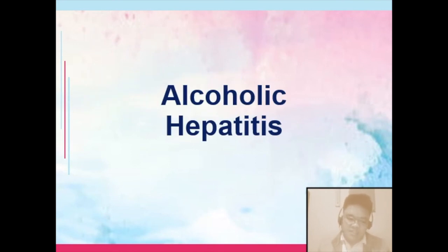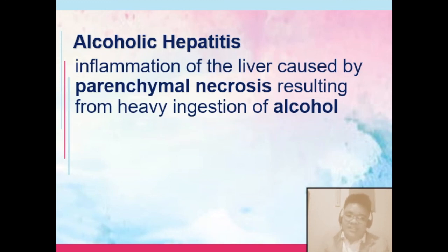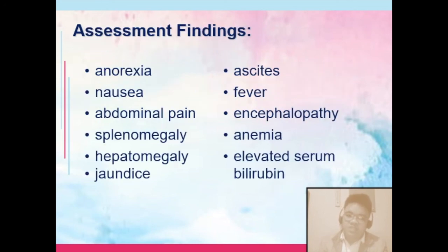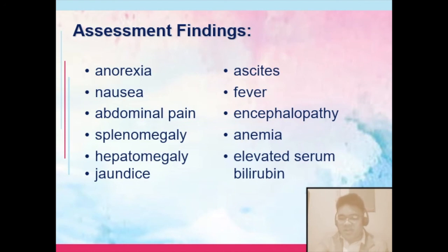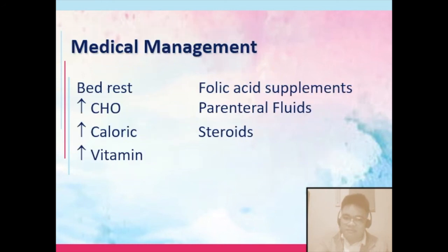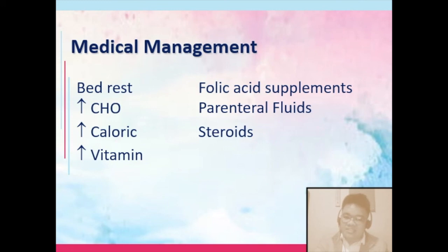Alcoholic hepatitis is inflammation of the liver caused by parenchymal necrosis resulting from heavy ingestion of alcohol, common among alcoholics. Signs and symptoms are the same, with elevated serum bilirubin common among patients manifesting jaundice, and encephalopathy. For management: bed rest, increased carbohydrate intake if the patient is conscious and fully awake, increased calorie in the diet, increased vitamins — usually vitamin B is given — folic acid supplement, parenteral fluids to dilute the blood, and steroids are also given.